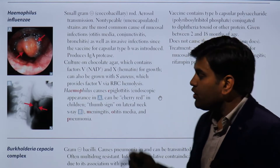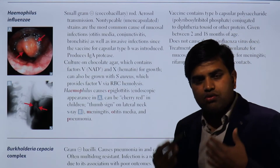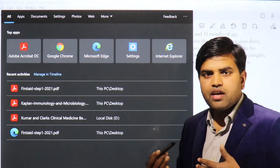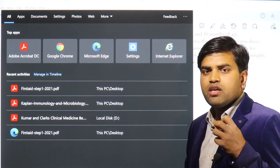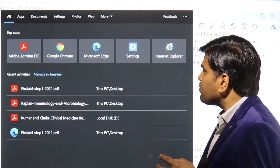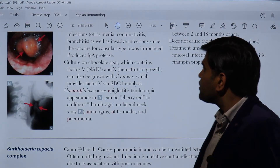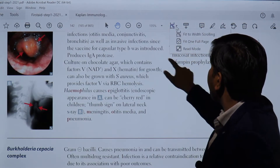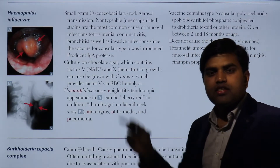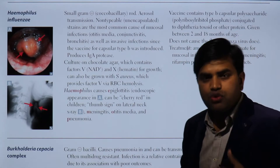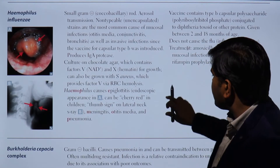Any organism primarily responsible for causing respiratory or GI tract infection needs to contain IgA protease to cause infection.